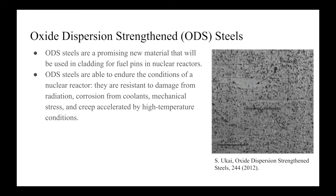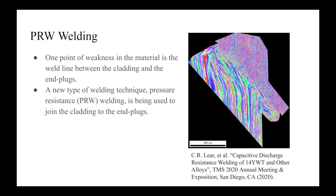To ensure that these fuel pins can withstand the conditions of a nuclear reactor, the fuel cladding has to undergo a very specific manufacturing process to ensure the correct strength and ductility in both the base material and joints. One issue is that the cladding must be welded to an upper end plug that seals off the fuel. If ODS materials melt during the weld process, microstructural changes in this joint can result in worse mechanical properties. To fix this, a new welding technique, pressure resistance welding, abbreviated to PRW, is being used. Although mechanical testing shows these welds are as strong as the cladding itself, whether stress is evenly distributed through the welding point and surrounding material remains unanswered.